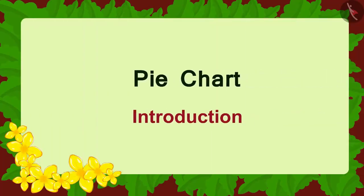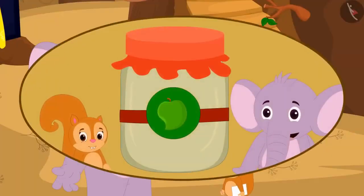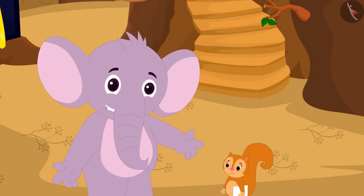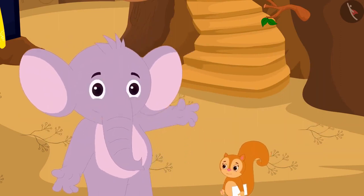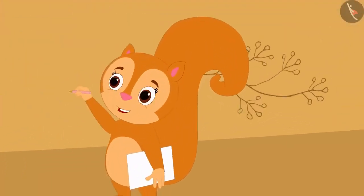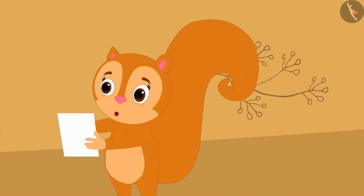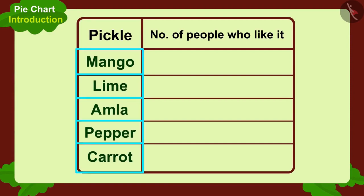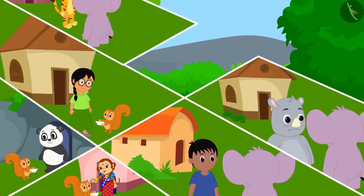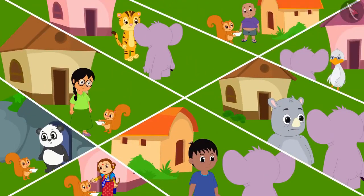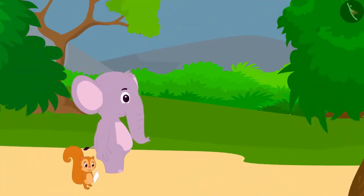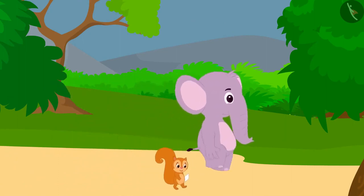In this video, we will learn about the pie chart. Chanda, I think we should first find out which pickles people like. Yes, Appu, let's find out by asking the villagers. I will write down the names of some pickles on a paper, then we will write the number of people who like that pickle in this table. Chanda and Appu go to people's homes to find out which pickle people like. By the end of the day, they completed their table by asking a hundred people.